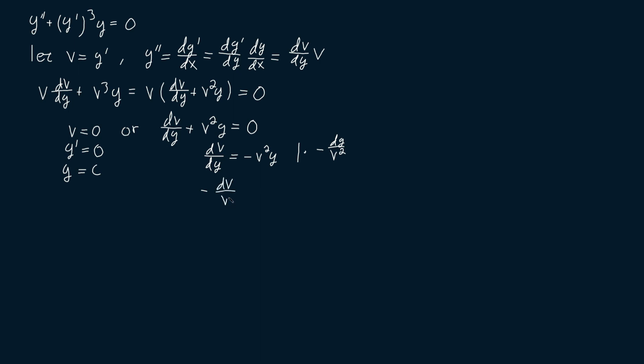Let's then multiply both sides of the equation by minus dy over v squared to get that minus dv over v squared is equal to y dy.